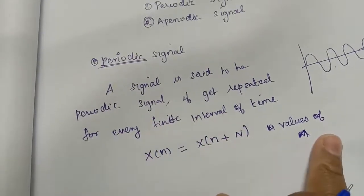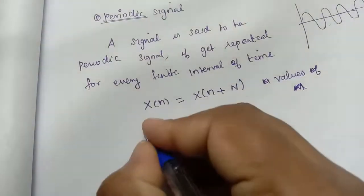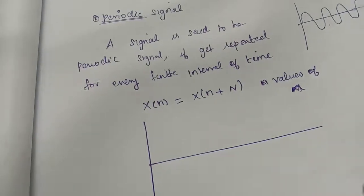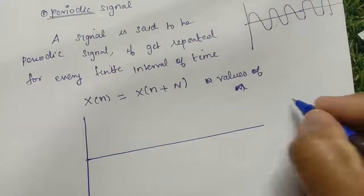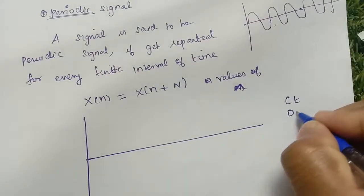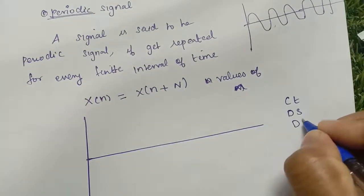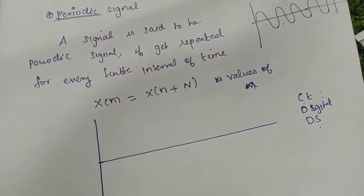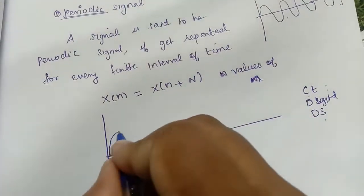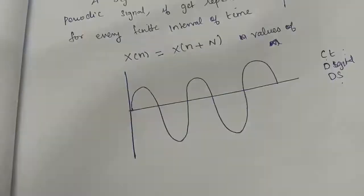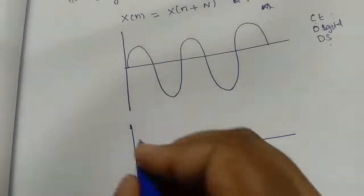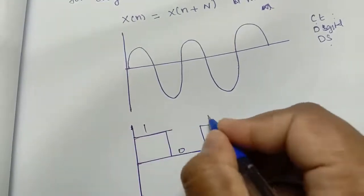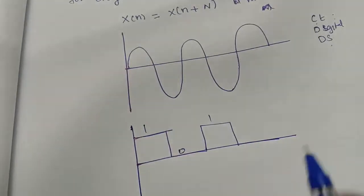Now, how will the periodic signal look? You already know what is a continuous signal and what is a discrete signal. Normally the signal is divided into three types: one is a continuous signal, another one is a digital signal, and another one is a discrete signal. A continuous signal is when you have a continuous interval of time. A digital signal gives you zeros and ones — binary values.